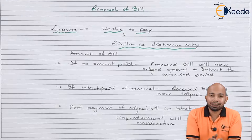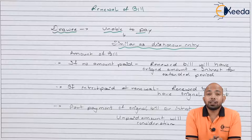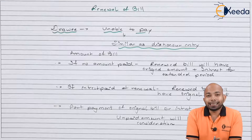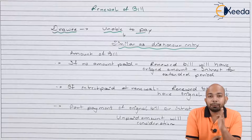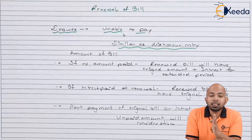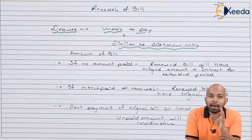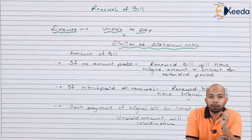There are three case scenarios here. First, if there is no amount paid during the renewal of bill, then in such a scenario the whole amount — that means the original amount plus the interest for the extended time period — will be added, and that will be the amount of the renewed bill.